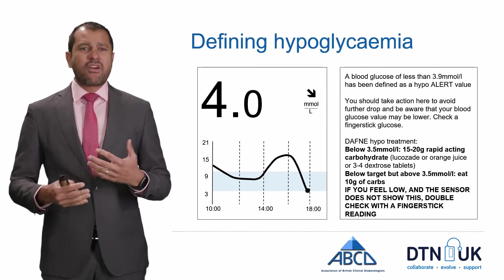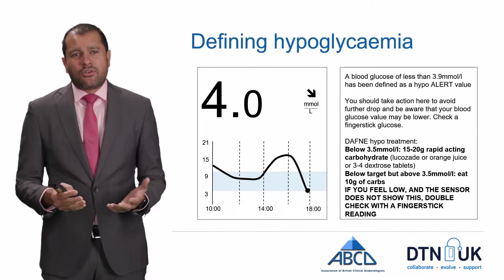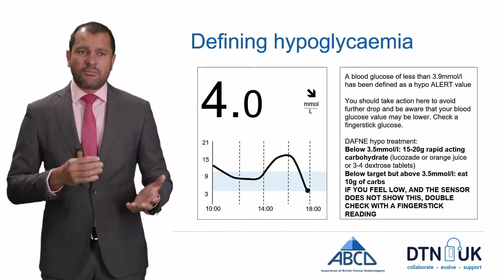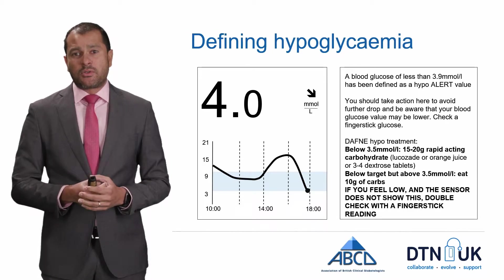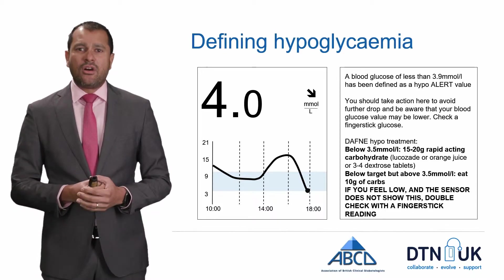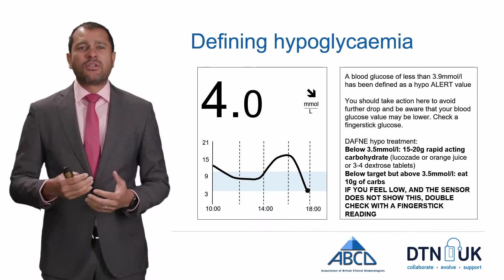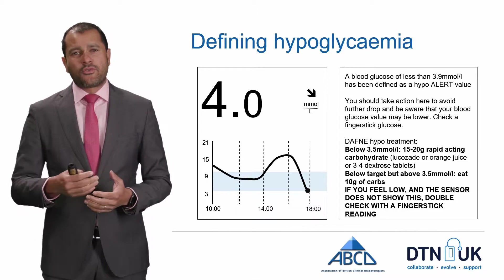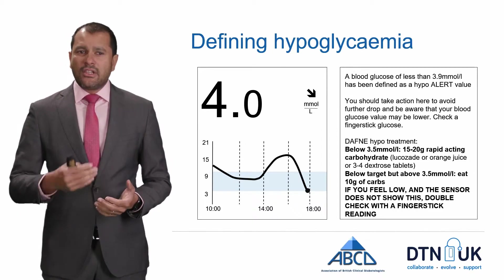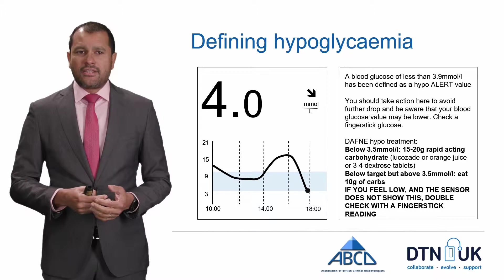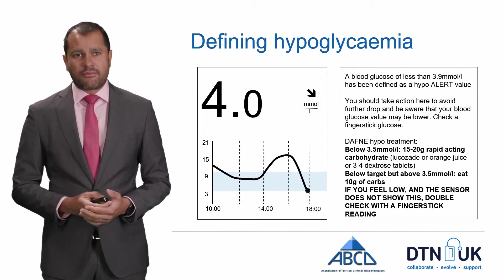If you look through the different recommendations for hypo treatment, the common education course Daphne would suggest that if you're between 3.5 and 4 millimoles per litre you should take between 15 and 20 grams of rapid-acting carbohydrate — about 150 mls of Lucozade or orange juice, or 3 to 4 dextrose tablets. If you feel low and the sensor does not show this, again you should double check with a finger stick reading.